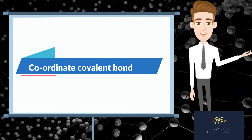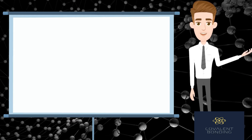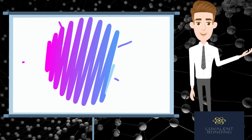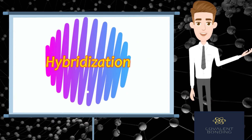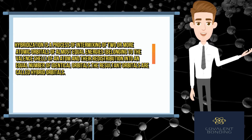A coordinate covalent bond is a special type of covalent bond in which only one of the participating atoms contributes the electron pair for sharing. The atom that gives the electron pair is called the donor and the other atom that accommodates the shared pair is called the acceptor. It is also called a dative bond. In order to explain the identical nature of bonds, the concept of hybridization and hybrid orbitals has come into existence. Hybridization is a process of intermixing of two or more atomic orbitals of almost equal energies, belonging to the valence shell, and their redistribution into an equal number of identical orbitals. The resulting orbitals are called hybrid orbitals.